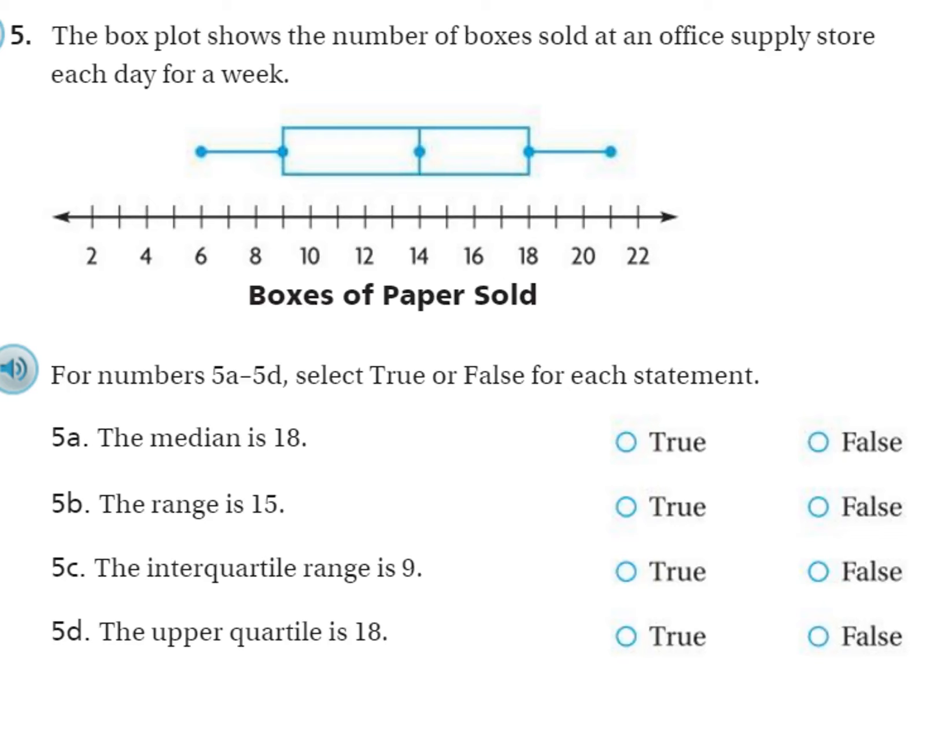Okay, number five. The box plot shows the number of boxes sold at an office supply store for each day for a week. So again, we have the least value, the greatest value, the median, lower quartile, upper quartile.